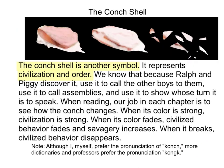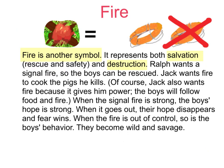The conch shell is another symbol representing civilization and order. Ralph and Piggy discover it, use it to call the other boys, call assemblies, and show whose turn it is to speak. In each chapter, we watch how the conch changes: when its color is strong, civilization is strong; when its color fades, civilized behavior fades and savagery increases; when it breaks, civilized behavior disappears. Note: most dictionaries and professors prefer the pronunciation 'conch.'